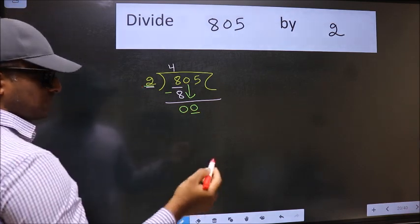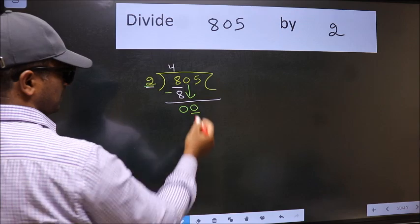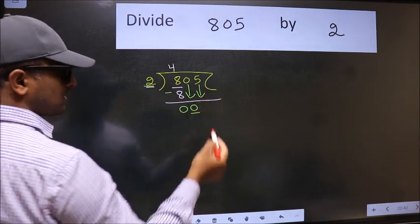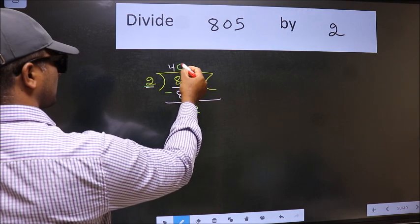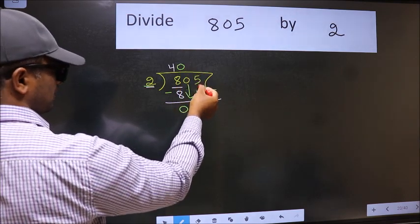So we should bring down the second number. And the rule to bring down the second number is we should put 0 here. Then only we can bring this number down.